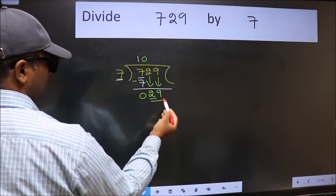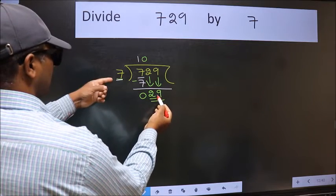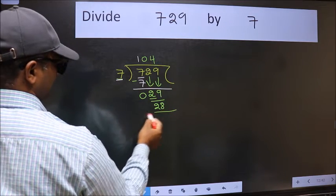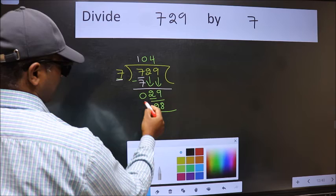Now 29. A number close to 29 in the 7 table is 7 fours 28. Now we should subtract, we get 1.